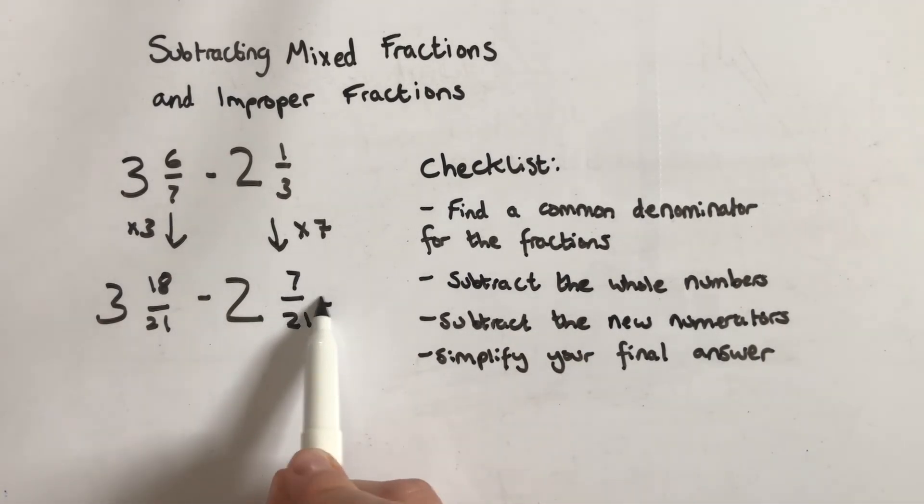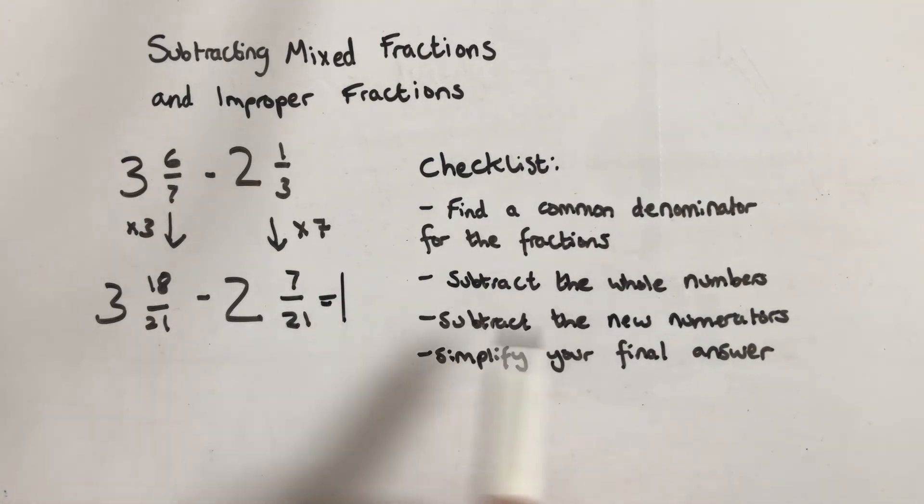Now it says I can subtract the whole numbers. Well, 3 take away 2 is 1. Subtract the new numerators because I've got the same denominator now. 18 take away 7 is 11, and then I keep the same denominator. So the answer is 1 whole and 11 21ths.